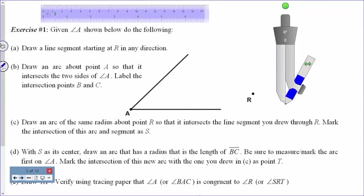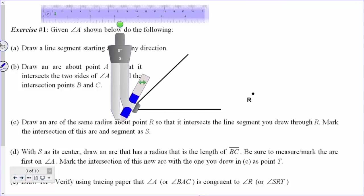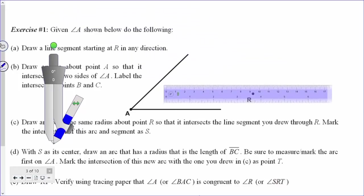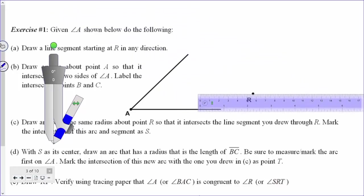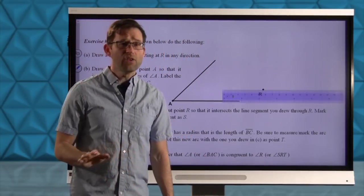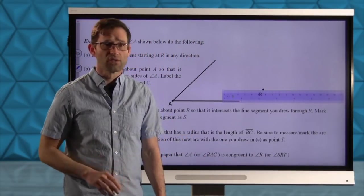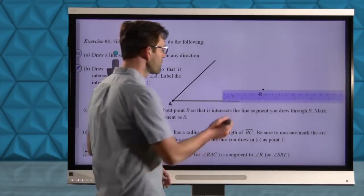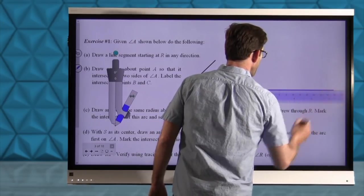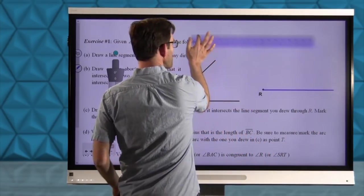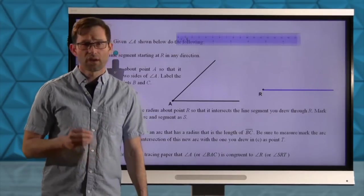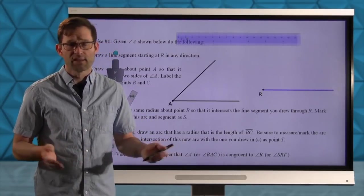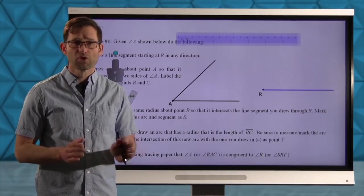Exercise number one: given angle A shown below, do the following. Letter A — draw a line segment starting at R in any direction. I can draw this line segment in any direction I want and it doesn't change the construction at all. It probably makes sense to draw a more or less horizontal line segment, and that's going to serve as one of the two rays to construct this angle. It doesn't matter which ray is which.